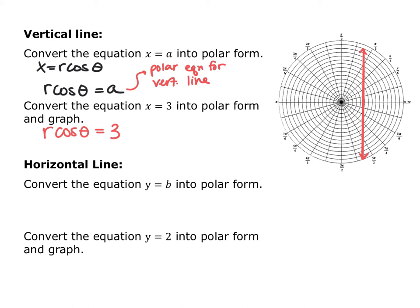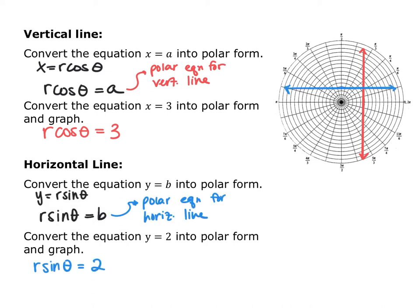Now do the same thing for a horizontal line. From the previous section, y equals r sine theta, so y equals b becomes r sine theta equals b. Whenever we have r sine theta equal to a number, that's the polar equation for a horizontal line. For r sine theta equals 2, we go up 2 — it's a horizontal line at height 2.